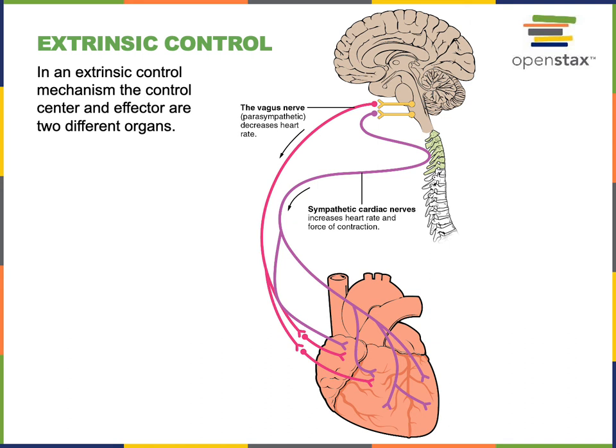We have many examples of extrinsic control throughout the semester. The thermoregulatory mechanisms described earlier were extrinsic control, with the control center in the hypothalamus and the effectors being skeletal muscles, sweat glands, blood vessels, or other organs distinct from the brain. In contrast, an intrinsic control mechanism has the control center and effector within the same organ.